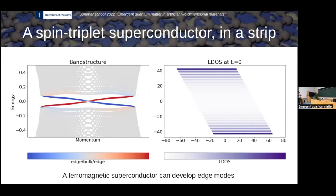Question: is there a superconducting gap in this structure? It depends on how you define the gap. If you call the superconducting gap the one you observe in the bulk, then yes there is a superconducting gap. If you include the edges, then there is no overall gap. For example, studying thermal transport, the system is gapless because heat can propagate through the edges. But doing local STM spectroscopy, you would see a gap in the bulk and no gap at the edges.